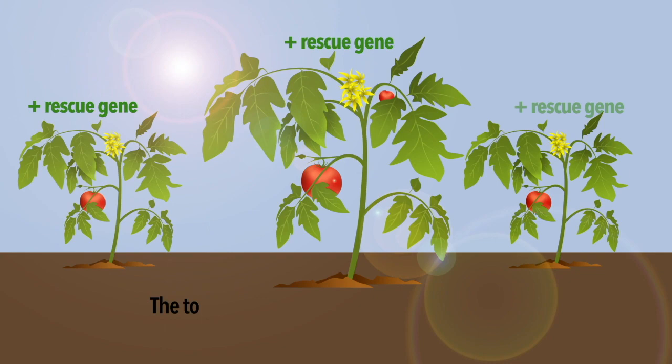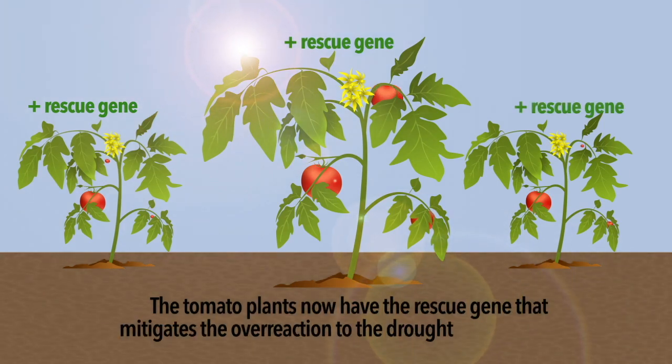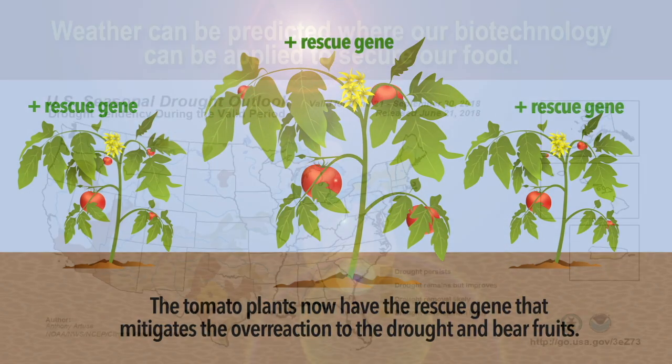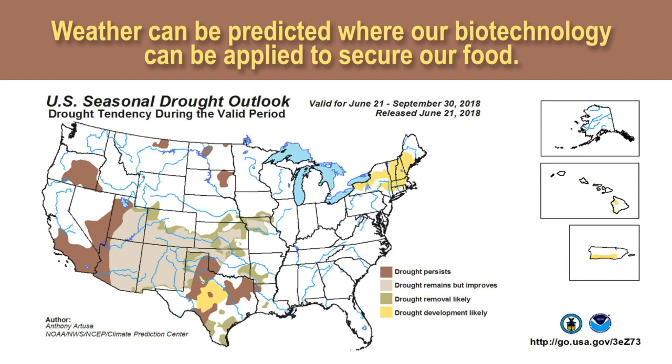At this point the protective gene can be delivered to the field under conditions that would be appropriate based on weather predictions to prevent an overreaction and therefore improve the productivity of fruits.